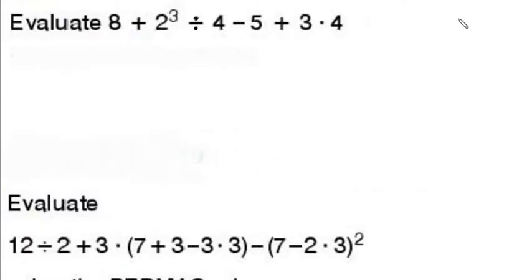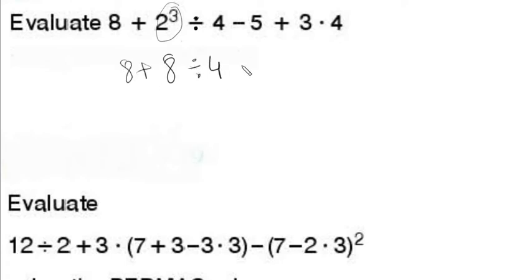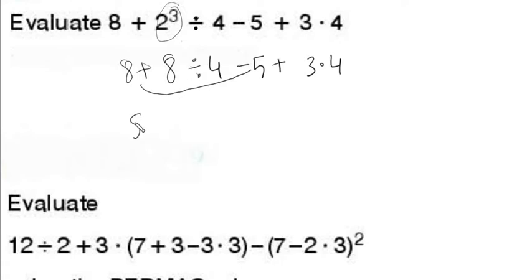Let's remember BADMAS. First, brackets — is there any bracket here? No bracket. So what is next? Exponents. We have 2 to the power of 3, so that's going to be 8. So: 8 plus 8 divided by 4 minus 5 plus 3 times 4. Division takes priority, so we do 8 divided by 4, which is 2.